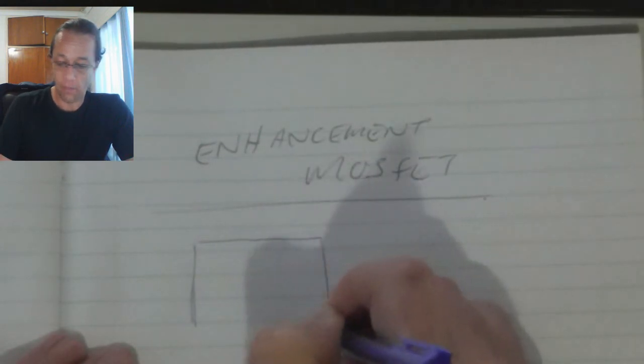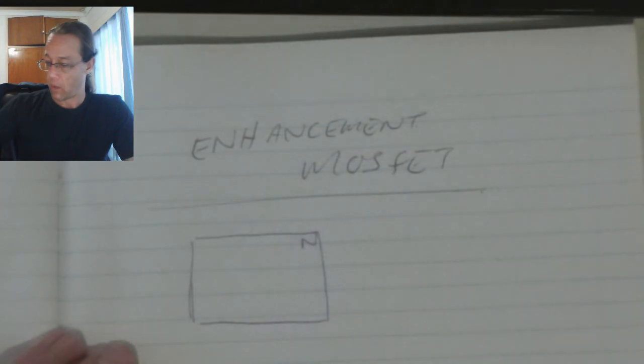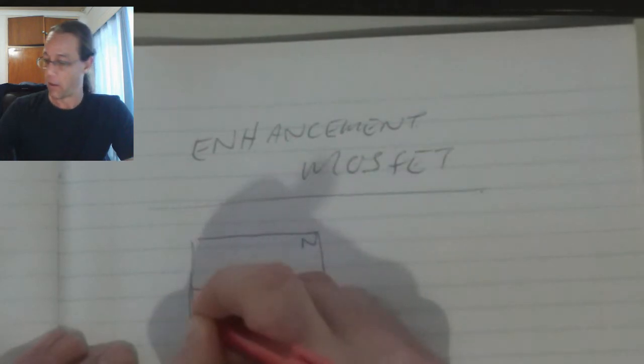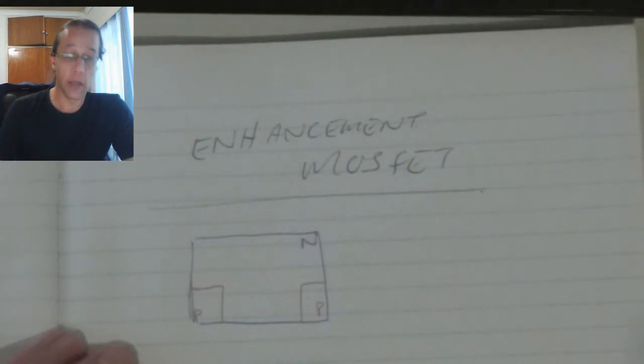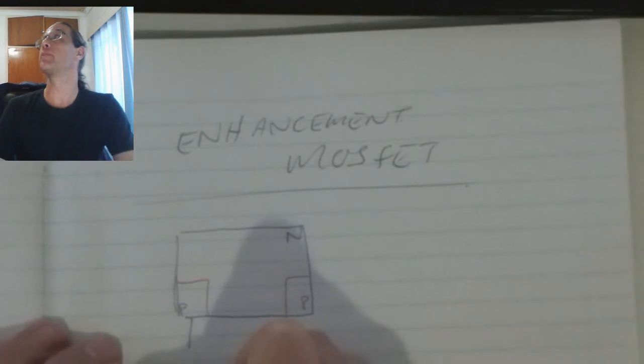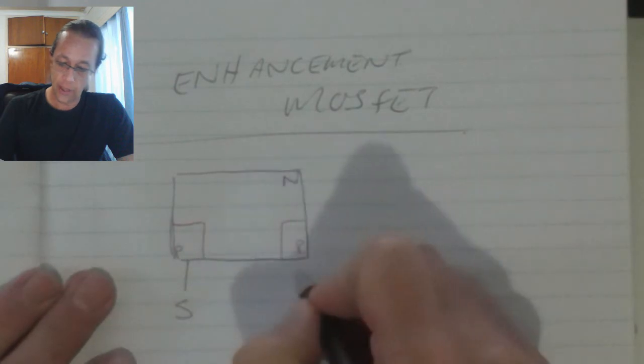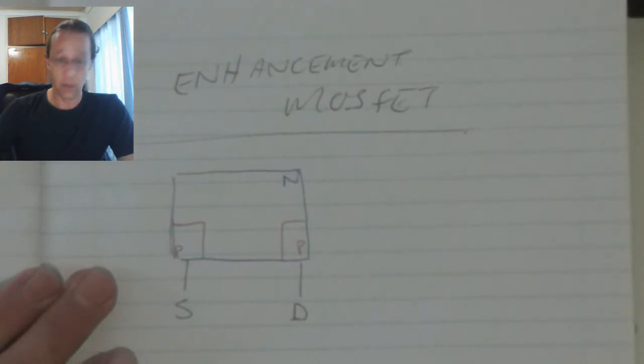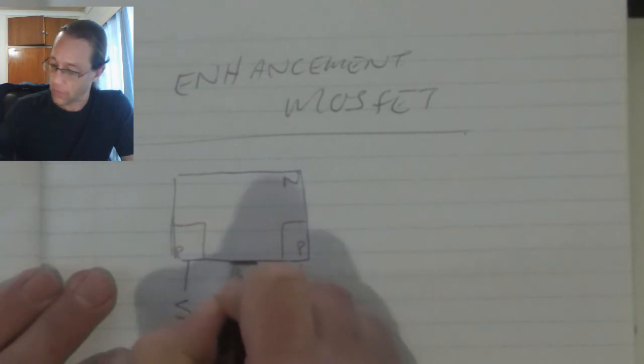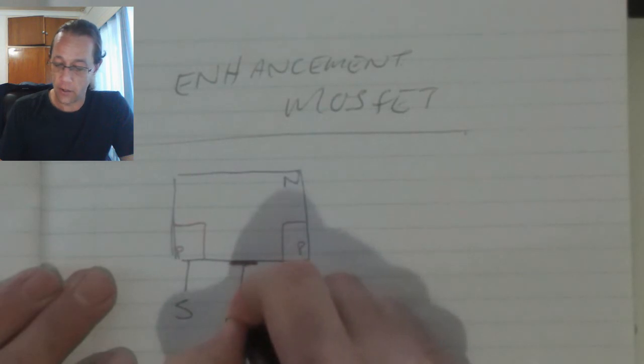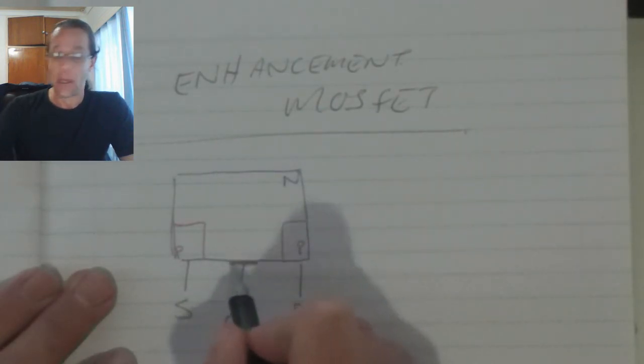We've got an N-type material. We've got our P-type material in this corner and that corner. These two will connect to the source and the drain. And again in the middle we're going to have our gate that is insulated by that metal oxide.